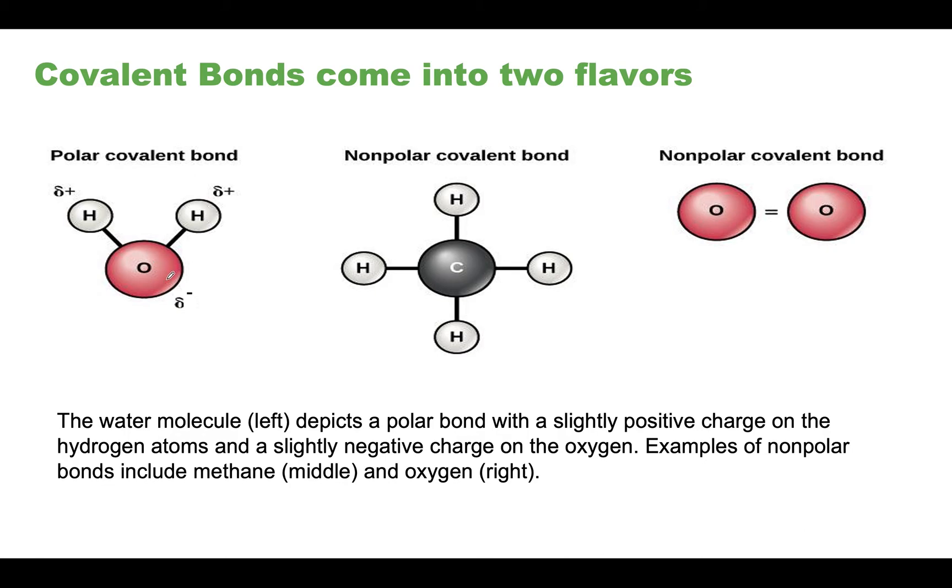Because oxygen pulls electrons towards itself with much higher force, electrons end up spending more of their time around the oxygen molecule. So there's going to be a deficit in terms of the amount of time that the electrons spin around these hydrogen atoms. When there is a big difference between the electronegativity of the atoms then the molecule becomes polar.